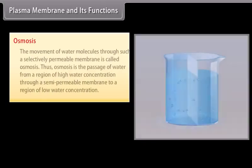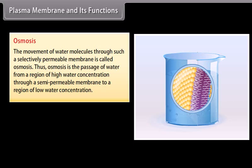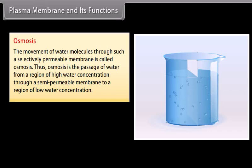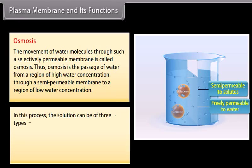Osmosis: The movement of water molecules through a selectively permeable membrane is called osmosis. Osmosis is the passage of water from a region of high water concentration through a semi-permeable membrane to a region of low water concentration. In this process the solution can be of three types: hypertonic solution, isotonic solution, and hypotonic solution.